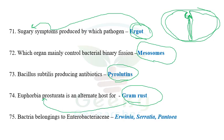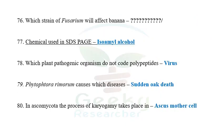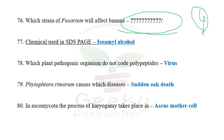The next question: bacteria belonging to Enterobacteriaceae family — options given included Erwinia, Pectobacterium (Pantoea), and others in one option, versus Pseudomonas and Xanthomonas in another. Erwinia, Pectobacterium, Pantoea come under Enterobacteriaceae. The next question: which strain of Fusarium will infect which banana variety? Race 4 of Fusarium oxysporum f. sp. cubense affects Cavendish banana; races 1, 2, and 3 affect other banana varieties.